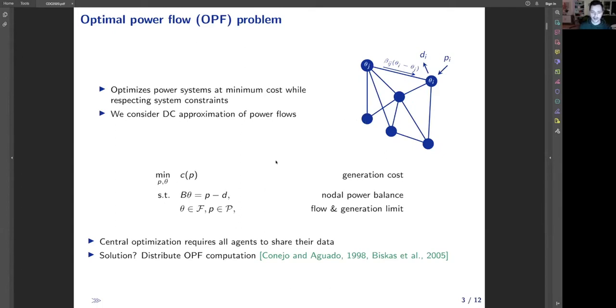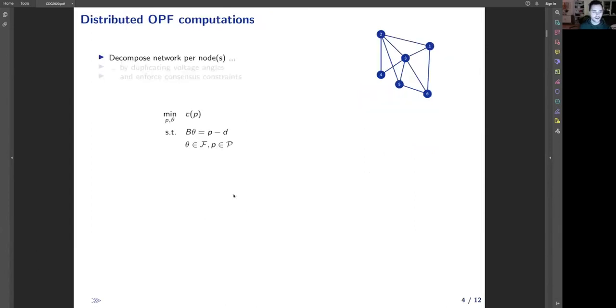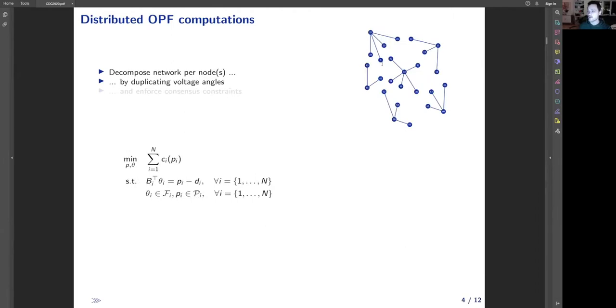To solve this problem centrally, one needs to collect all the network data that might involve certain privacy risks. To minimize this risk, it has been proposed to solve this problem in a distributed way. Distributed OPF computations generally require decomposition of the network into nodes or a set of nodes. For example, this node system on the right can be decomposed into subgraphs where every node is given duplicates of voltage angles of all neighboring nodes.